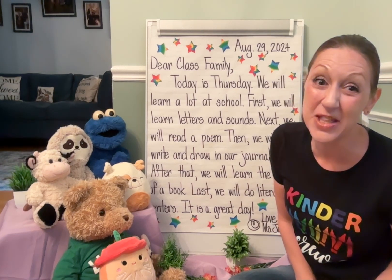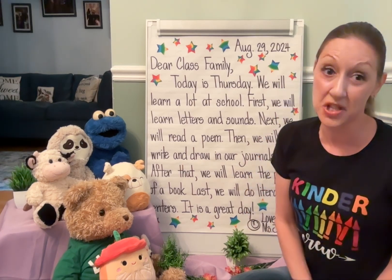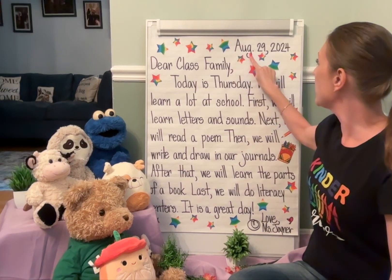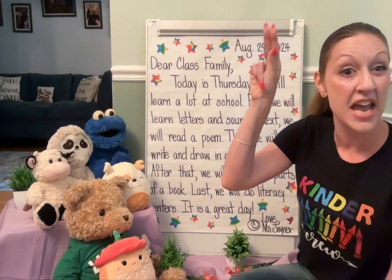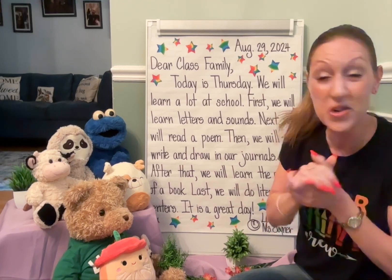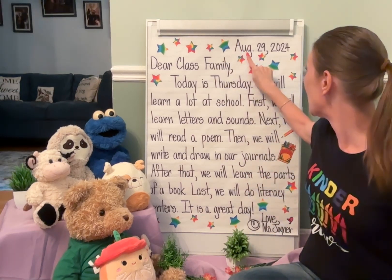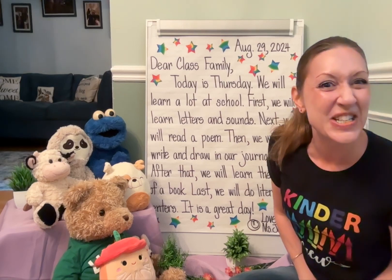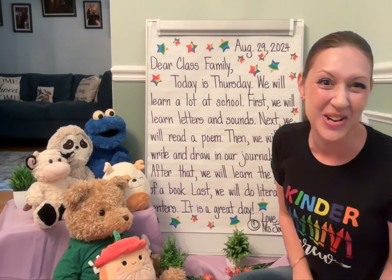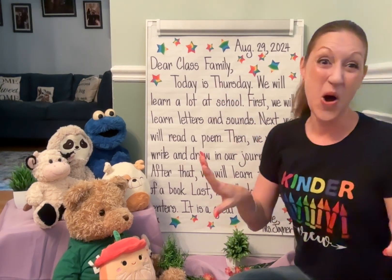We're going to look back and re-read the message. That's what good readers do — they re-read so their brain can understand the words on the page. Use your finger to point. Start in the top right-hand corner with the date. I noticed the abbreviation for this month spelled with the capital letter A-U-G, period. What does that abbreviation, or shortened way to write the word, stand for? We'll say the name of the month out loud. If you said August, you're right. Great job. Notice the capital letter A to start.